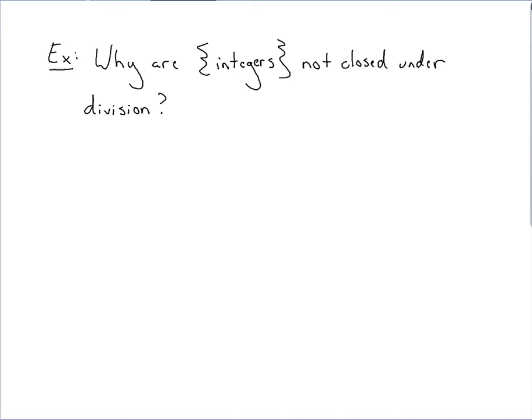If you take any combination of integers and you divide them out, are you always going to get something back that's also an integer? That's what this is all about.